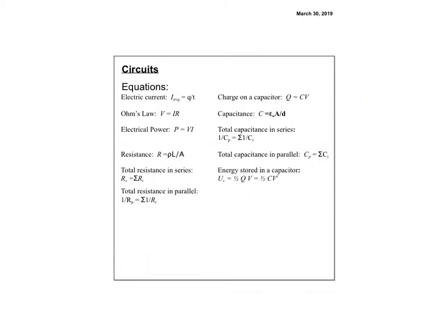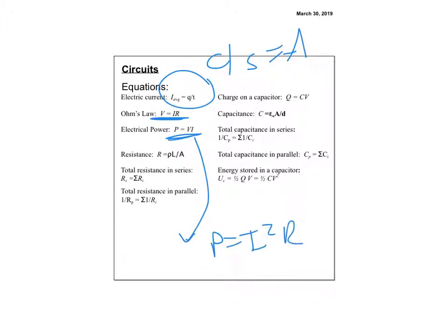For circuits, current I is charge per time — coulombs per second, which equals an amp. Ohm's law: V = IR. Electric power: P = VI, and also P = I²R or P = V²/R (derived by substituting Ohm's law). Resistance is proportional to resistivity and length, and inversely proportional to area — the straw analogy: bigger straw is easier, longer straw is harder.